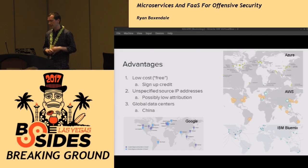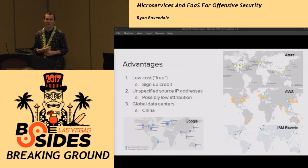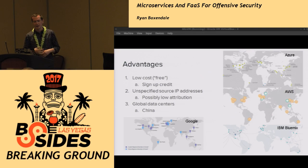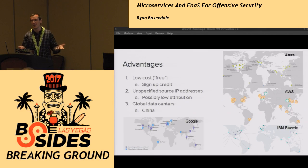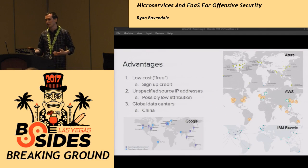In summary, the advantages of Functions as a Service include low cost. You get signup credit with most providers — AWS gives you $300 when you sign up, and it's pretty hard to use all that $300 if you're only using the Functions as a Service platform. You get an unspecified source IP address because your code is injected into some random server within the infrastructure they manage. And you have global data centers, so you can get an IP address out of China and do certain simulated attacks with that.